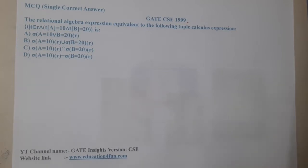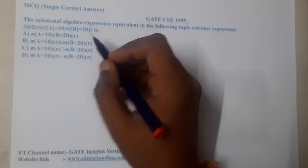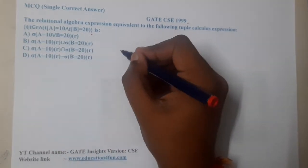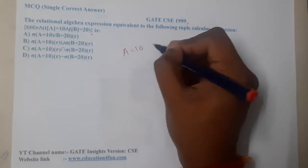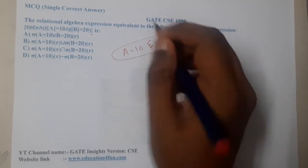They clearly give a tuple calculus relation. T such that T belongs to R and T of A, so the value of A should be 10, and the value of B should be 20. This is the only condition.